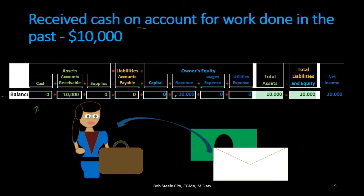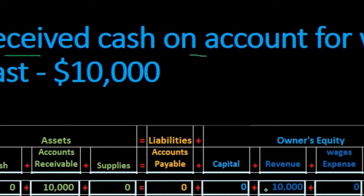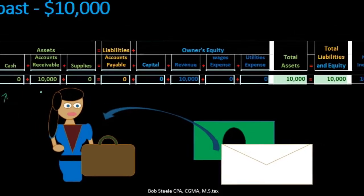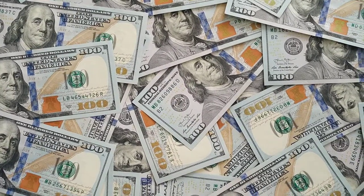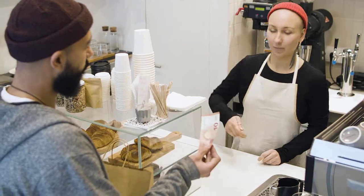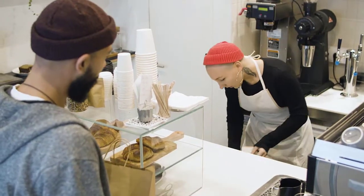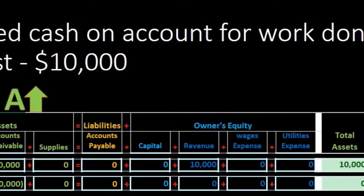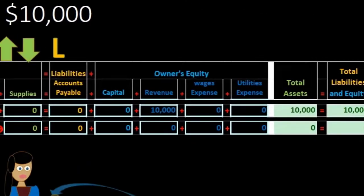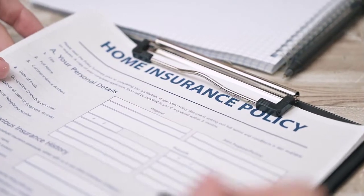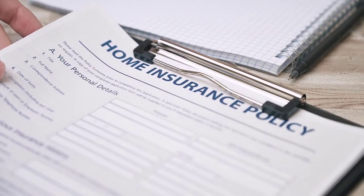We're getting $10,000 from the client and might think that should be revenue, but revenue was already recorded in the prior transaction because we did the work then — not now. At this point, we are just receiving the payment. Therefore, the other account affected is accounts receivable: since people owed us $10,000 and they paid us, the receivable must decrease. Cash increases and receivable decreases.